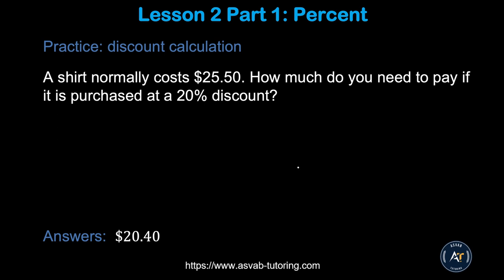Practice: a shirt normally costs $25.50 — how much do you pay after a 20% discount? Convert 20% to decimal and multiply by $25.50 to find the discount amount, then subtract from $25.50. Try it yourself and you should get the answer.